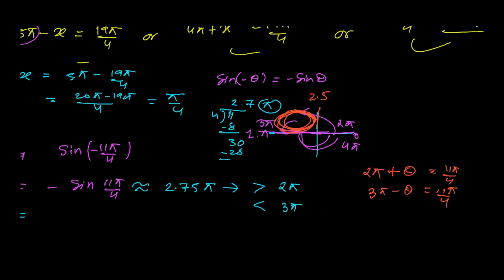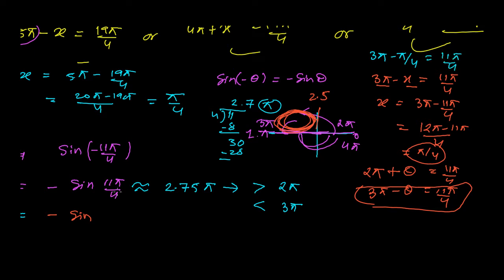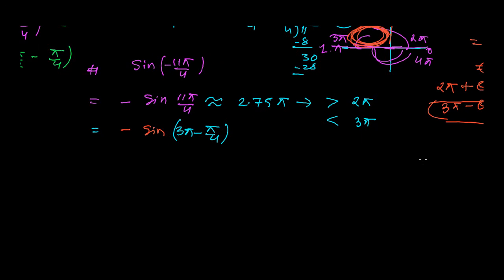Let's use 3π − x = 11π/4. So x = 3π − 11π/4 = (12π − 11π)/4 = π/4. Therefore 11π/4 = 3π − π/4. A key rule: whenever you have a multiple of π (not π/2), there is no change in the trig ratio. This means sin remains sin. So −sin(11π/4) = −sin(3π − π/4) = −sin(π/4).